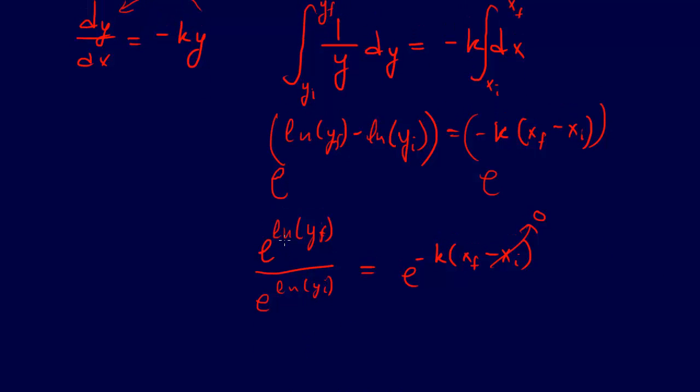e^ln is just y, so we got y_final/y_initial, but rather than writing that, I'm going to multiply to the other side, so y_final = y_initial * e^(-kx_final). This is the solution to that differential equation. Of course, we have to have the initial information, y_initial, to be able to solve that.